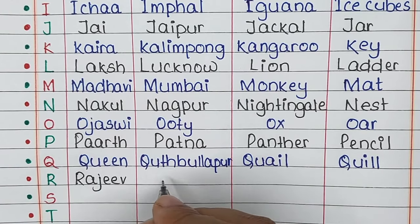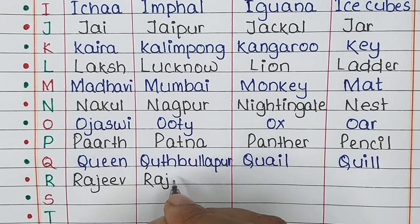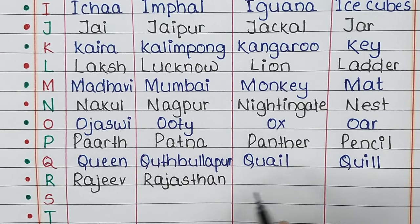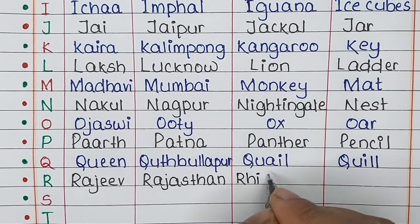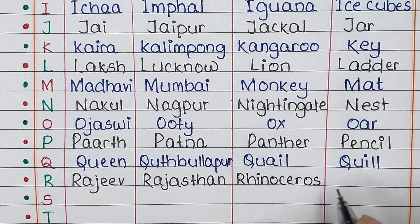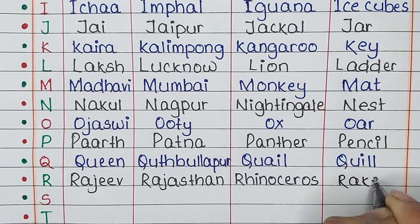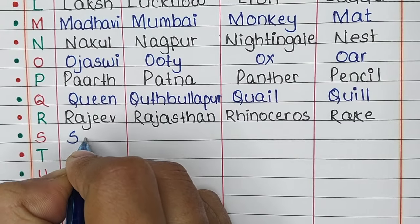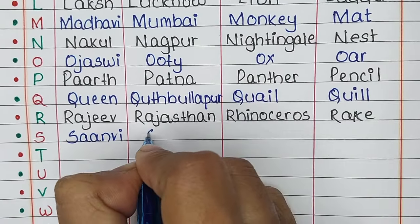Next is letter R. The name that starts with this letter is Rajiv, the place is Rajasthan, the animal is Rhinoceros, and the thing is Rickshaw.